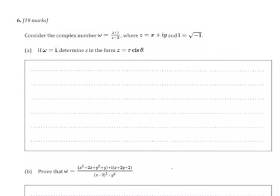Hey everybody, back again here for problem number 6. 19 marks on this question. It says: consider the complex number w equal to (z + i) over (z + 2), where z equals x + iy and i is the square root of negative 1. It says if w equals i, determine z in the form z equals r cis θ.